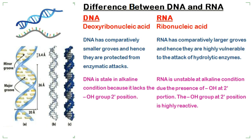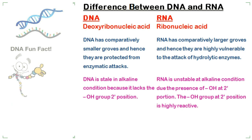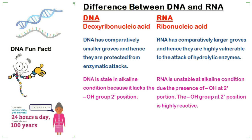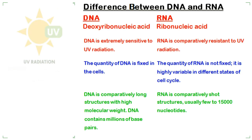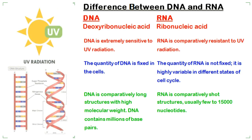DNA has comparatively smaller grooves and hence is protected from enzymatic attacks, while RNA has comparatively larger grooves and is highly vulnerable to the attack of hydrolytic enzymes. DNA is stable in alkaline conditions because it lacks the hydroxyl group at the second position, while RNA is unstable in alkaline conditions due to the presence of a hydroxyl group at the second position, which is highly reactive.